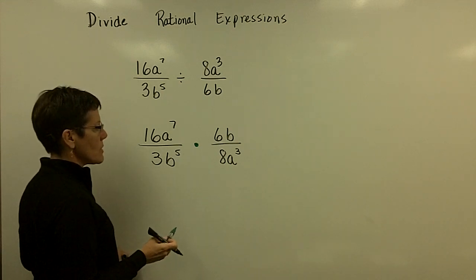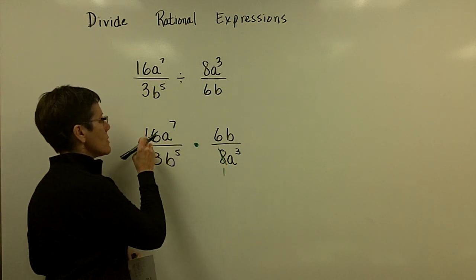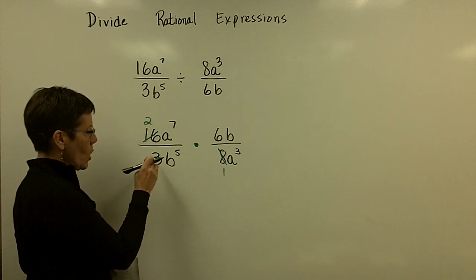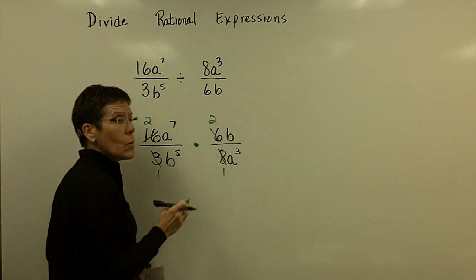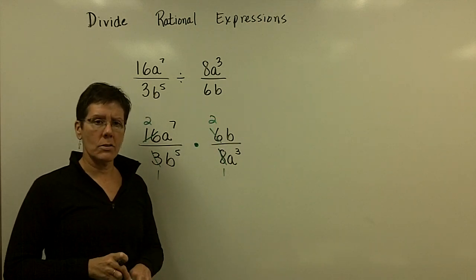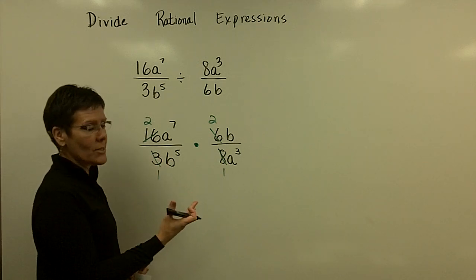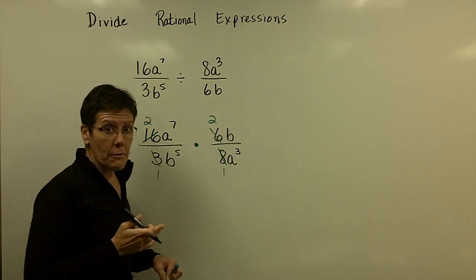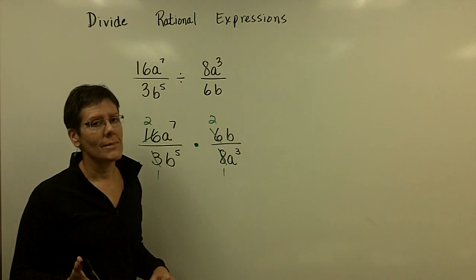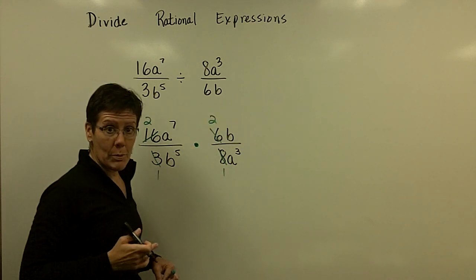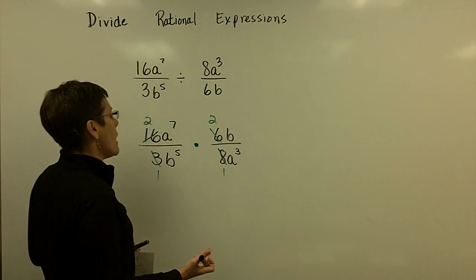I'll focus on numerical factors first — it looks faster and more efficient. I take the eight out of here once and eight out of here twice. There's also a three that goes into each of those: three goes in here once and in there twice. For the variable factors, b to the first over b to the fifth would be b to the fourth in the denominator; subtracting exponents top to bottom gives b to the negative four upstairs, which moves downstairs as b to the positive four.